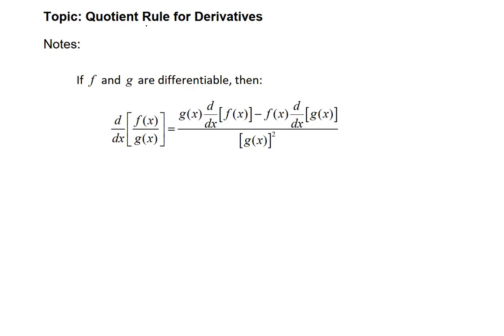This video is about the quotient rule for derivatives. For our notes we'll just dive right in with the rule. If f and g are differentiable, then the derivative of a quotient of functions f of x over g of x is kind of like the product rule — more complicated than we would like. It'd be nice if it was just the derivative of the numerator over the derivative of the denominator, but it's not. The notation to represent this rule can be a little clunky, but I'm going to read through it and then show you a shortcut way of remembering the rule.